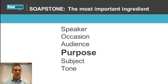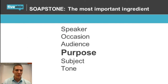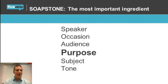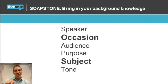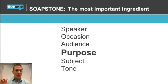The most important ingredient of SOAPSTONE is purpose. Occasion, subject, speaker, audience — these are all important. But purpose is the most important piece. If I haven't identified the purpose, I have not read at a high enough level and I'm not ready to analyze. I'm thinking about the occasion and the rhetorical triangle before I read. While I read, I'm really focusing on: am I getting the author's primary purpose here?